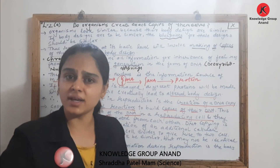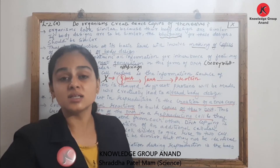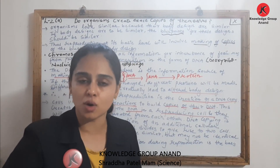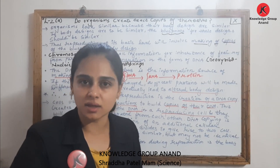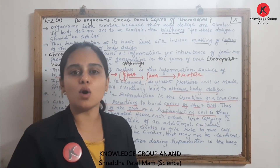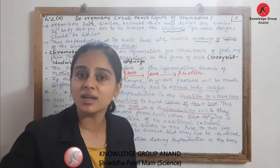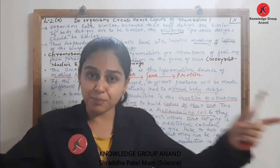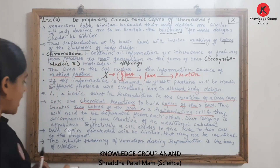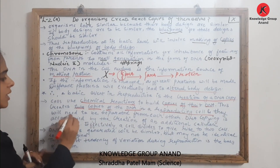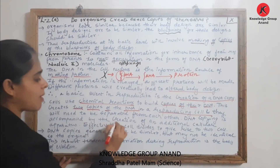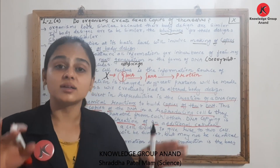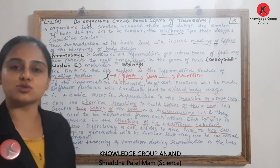But is copying DNA alone enough? If the cell contains only DNA, will it survive? No. The cell requires additional cellular apparatus as well — organelles are also needed. So DNA copying is not enough; DNA copying along with copying of additional cell apparatus like organelles is essential for the cell to survive. DNA copying is accompanied by creation of an additional cellular apparatus, and then the cell divides to form two daughter cells.